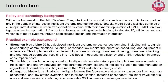Second, practical example background. Shenzhen Metro Line 20 has deployed intelligence systems across various domains, including trains, signals, power supply, communications, ticketing, passenger flow monitoring, operations scheduling, and equipment maintenance. This implementation achieves fully automatic driving, unmanned ticketing and checking, and unattended operations, resulting in a 10% boost in operational efficiency and a 15% reduction in energy consumption costs.